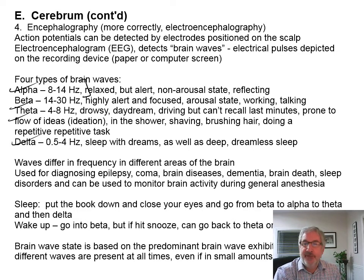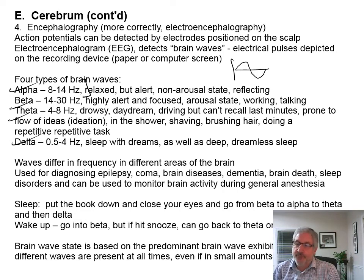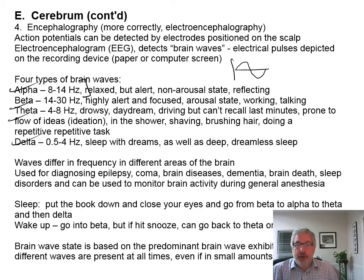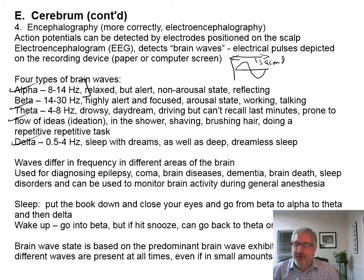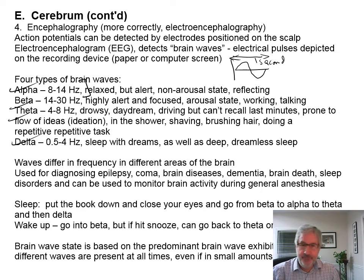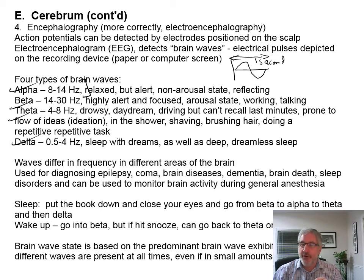Hertz is a frequency — one cycle per second. So alpha waves would have 8 to 14 cycles per second, or hertz. Delta would be one-half to four cycles per second. You can also use these to measure brain activity during general anesthesia. When you're trying to go to sleep, you can go from beta — where you're alert and reading — to alpha, where you're relaxed, then drifting off into theta, and then suddenly you're in delta.